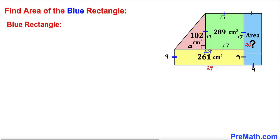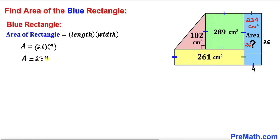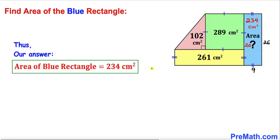Now finally let's focus on this blue rectangle. Since we are dealing with a rectangle, if this side length is 26 centimeters then the opposite side is 26 centimeters as well. Using the area of a rectangle formula, area equals length times width: the length is 26 and the width is 9, so the area is simply 234. Thus the area of this blue rectangle turns out to be 234 centimeters squared. Thanks for watching.